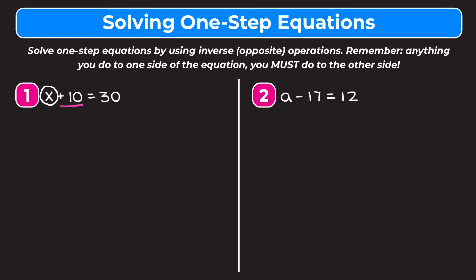We're adding 10 to x, and the inverse or opposite of addition is subtraction. So we're going to subtract 10 from the left side of the equation, because subtraction is the inverse of addition. On the right side we have 30, and this is where our second tip comes in — anything you do to one side of the equation you must do to the other side, so we subtract 10 from the right side too to keep the equation balanced.